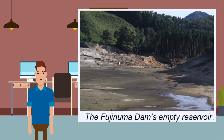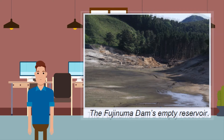The Fujinuma Dam failed and collapsed after the earthquake, washing away five houses and killing at least four people. Minor liquefaction of the ground caused by shaking led to damage of roads and infrastructure.